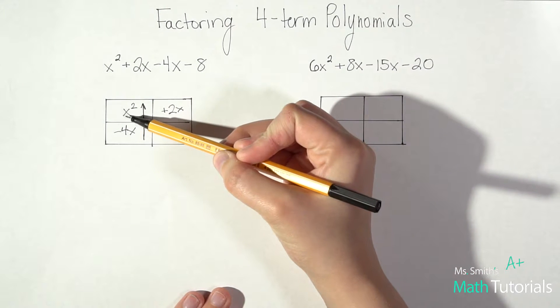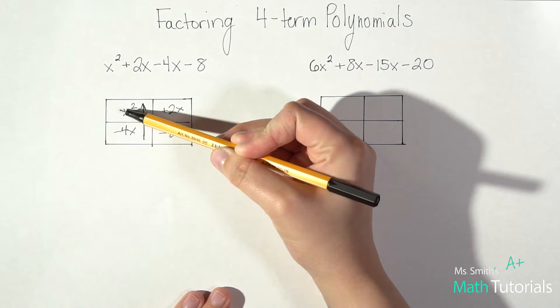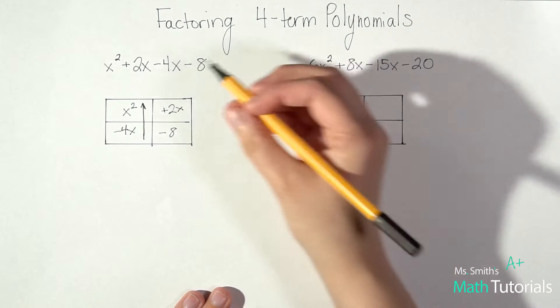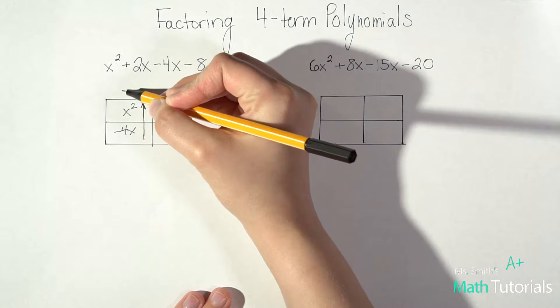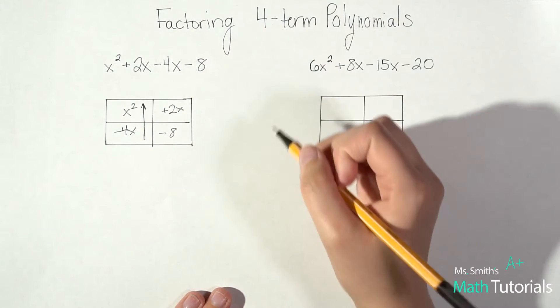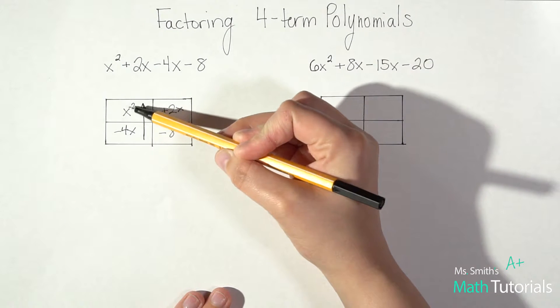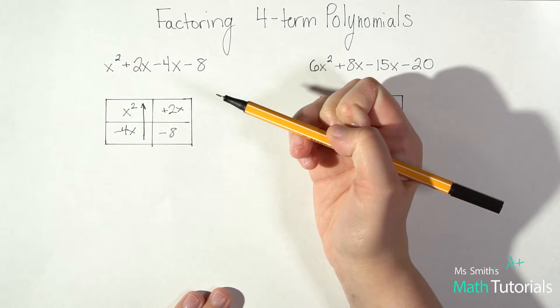So that x squared has a 1 in front of it, so between 1 and negative 4 our GCF would just be 1. So you can write 1 if you need to see it or you don't have to.